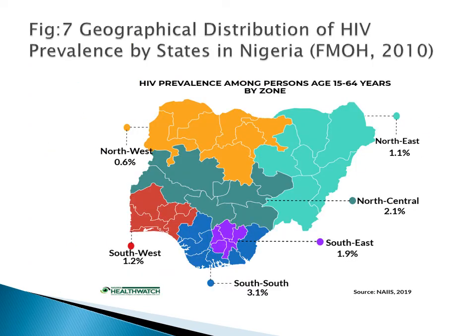This map of Nigeria shows HIV prevalence across geographical zones as of 2018. Prevalence is highest in the South-South, followed by the North Central, South-West, North-East, and then the North-West.